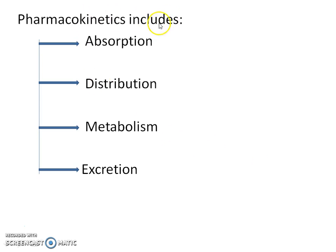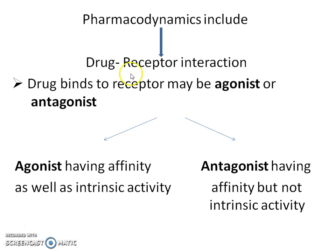Pharmacokinetics includes absorption, distribution, metabolism and excretion by different routes. Whereas pharmacodynamics includes drug-receptor interaction — a drug binds to a particular receptor and may act as an agonist or antagonist.